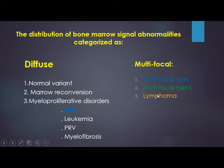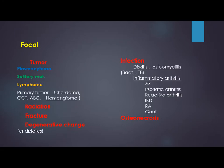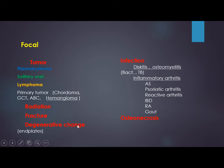Focal abnormality may be a tumor: focal multiple myeloma called plasmacytoma, solitary metastasis, lymphoma, or primary tumor. Among primary tumors, we will discuss only hemangioma. Other causes may be radiation, fracture, degenerative change, infection, and osteonecrosis.